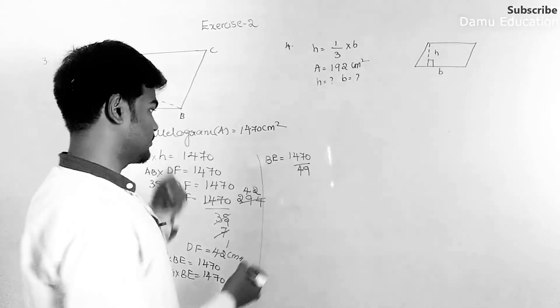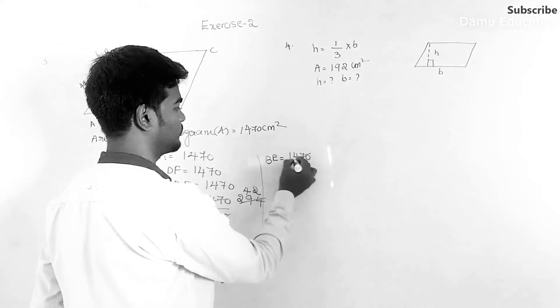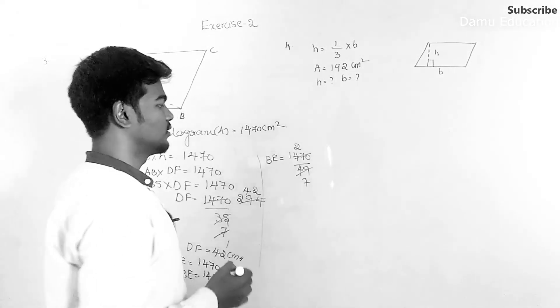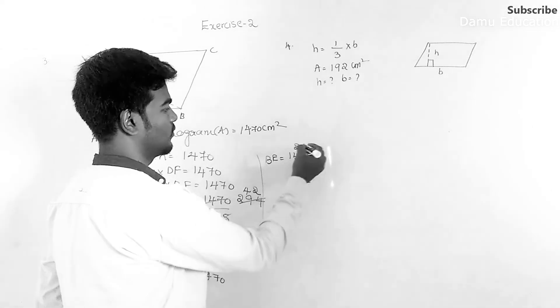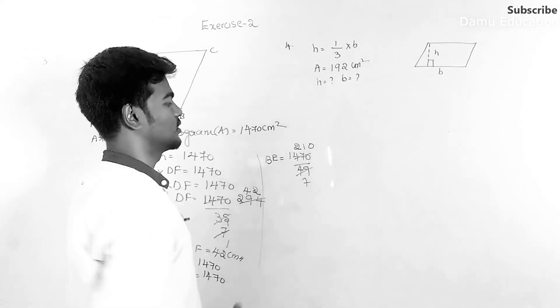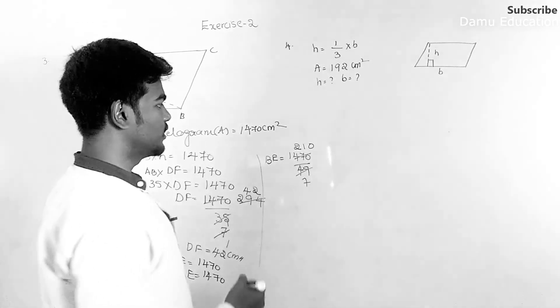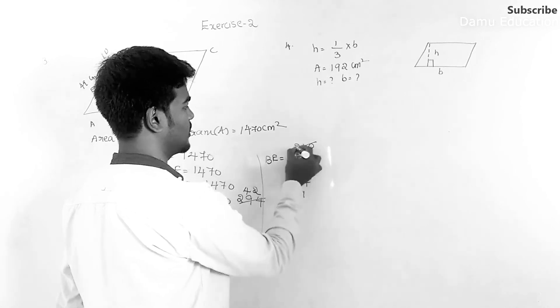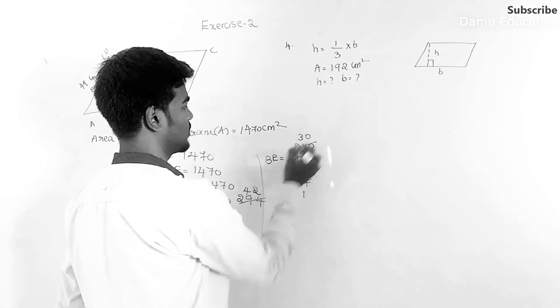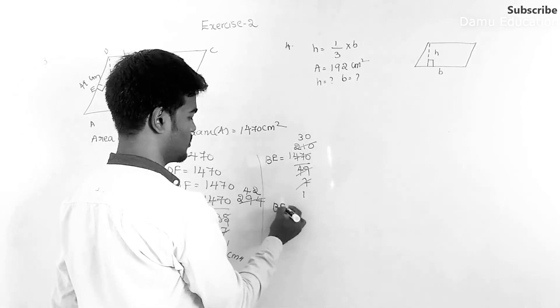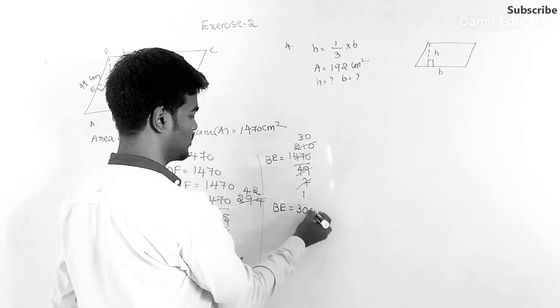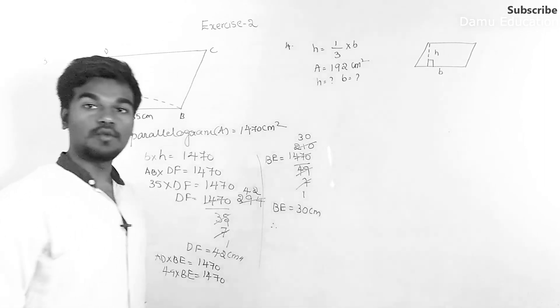7 into 7, 7 dozen, then 14, 7 into 1, 7 into 0. Then again we'll do with 7: 7 into 1 is 7, 7 into 3 is 21. So BE will be equal to 30 centimeters.